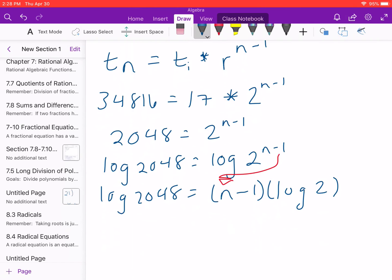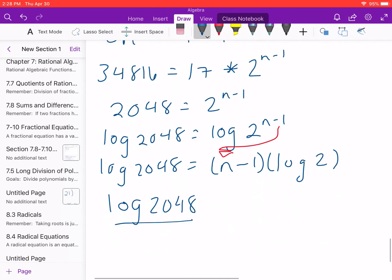And so then what we can do is go ahead and isolate n minus 1. So we'll take the log of 2048 divided by the log 2 equals n minus 1.